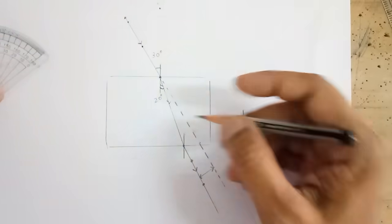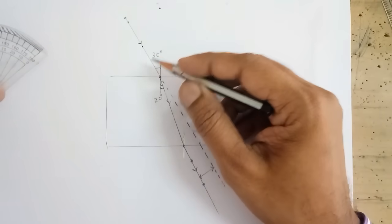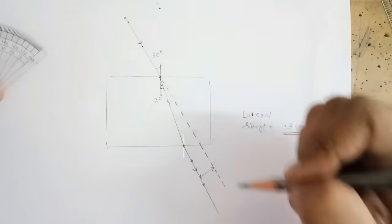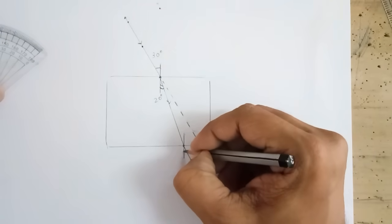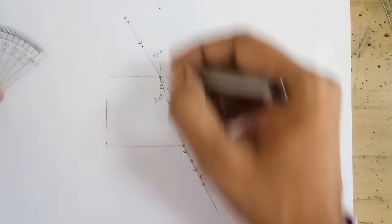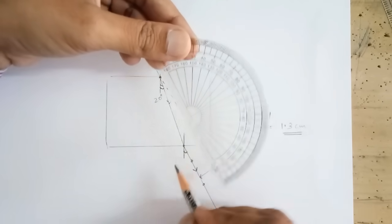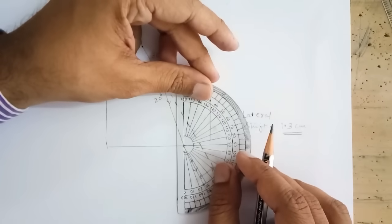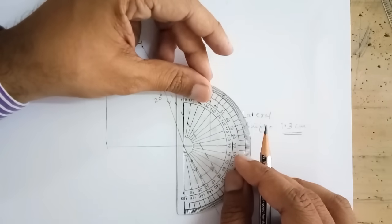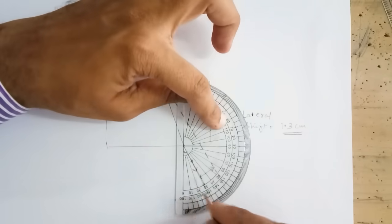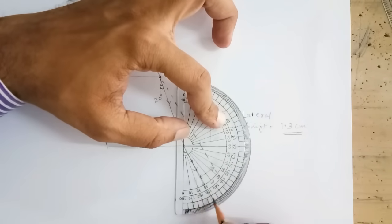So, this is the way in which we measure the angle of incidence, angle of refraction and the angle of emergence would be same as the angle of incidence. Let us check that again. So, this point I am going to put this point over here.